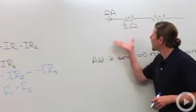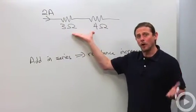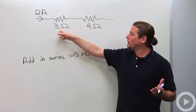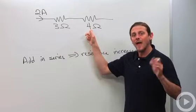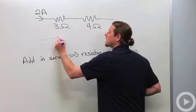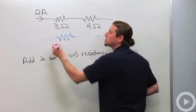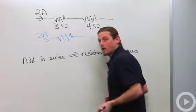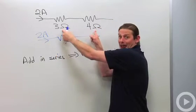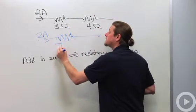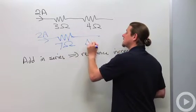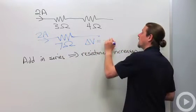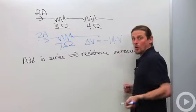All right, so if I've got a two amp current flowing through a three ohm resistor connected in series to a four ohm resistor, that's the same thing as a two amp current going through an effective combination of seven ohms. So the potential difference is negative 14 volts, IR.